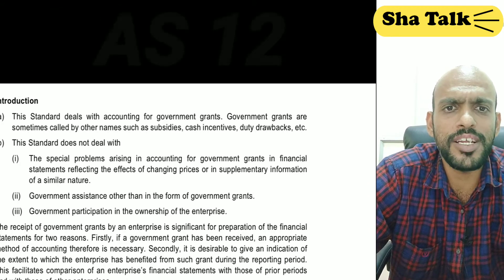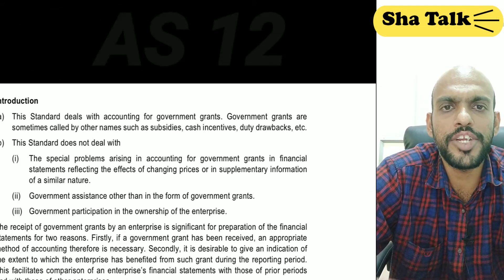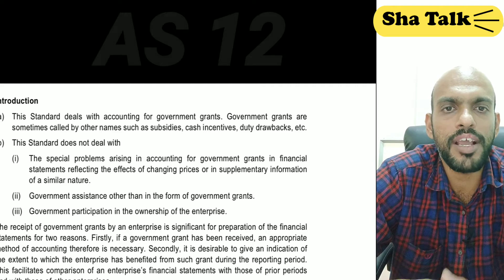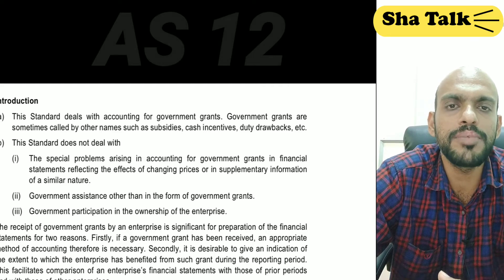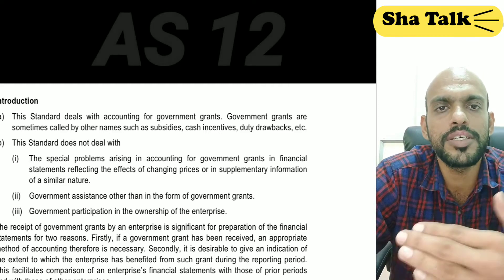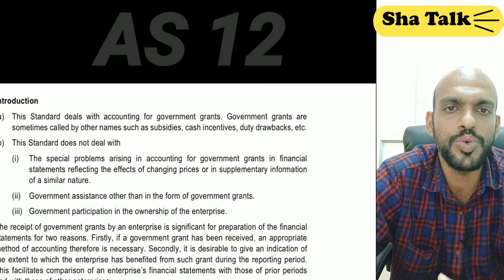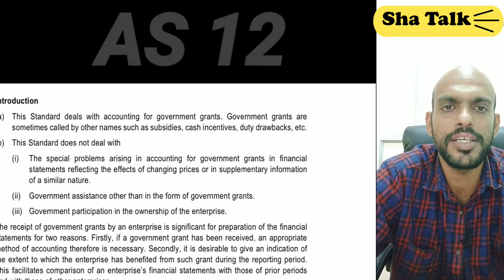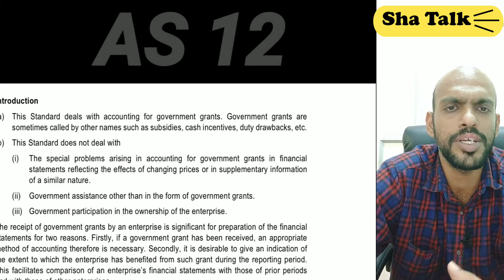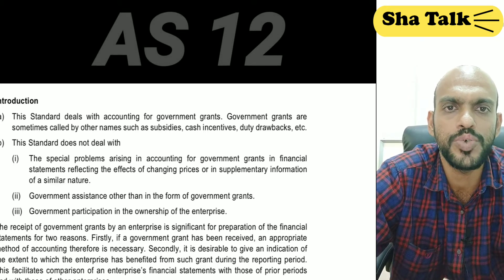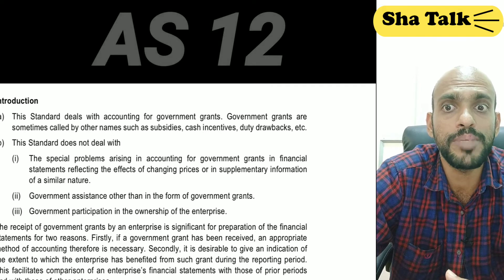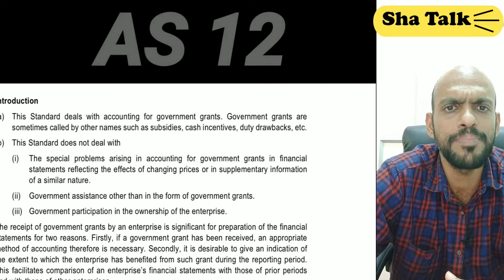Accounting for government grants is covered under accounting standard 12. We are going to talk about CPA Intermediate and CMA Intermediate — this is an important area worth about 4-5 marks in the exam.